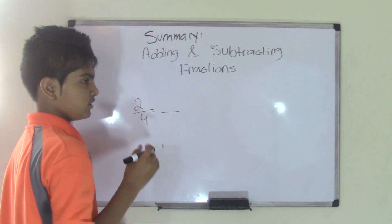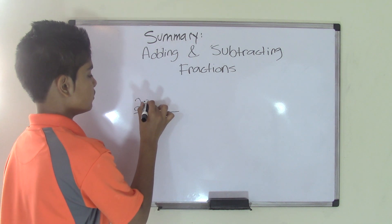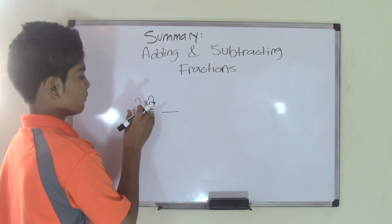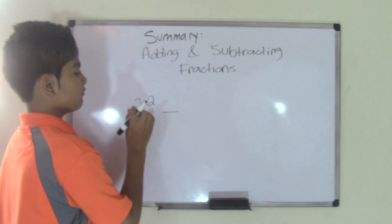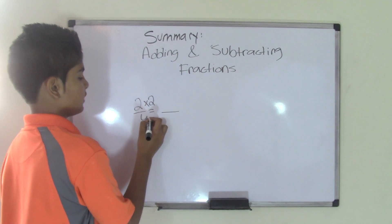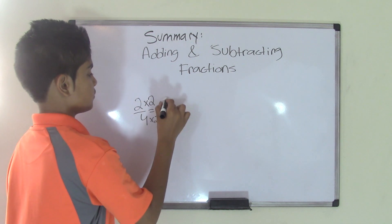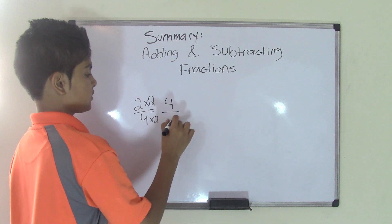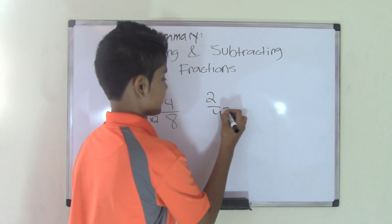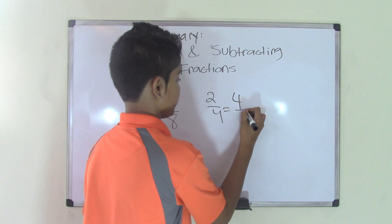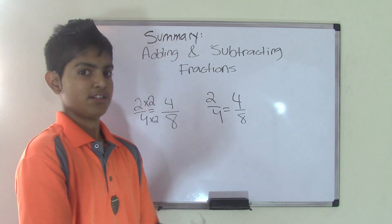So let's use the number two. We're multiplying the numerator by two and the denominator by two as well. So two times two is four, and four times two is eight. So an equivalent fraction for two-fourths is four-eighths — you can just go ahead and tell them that.